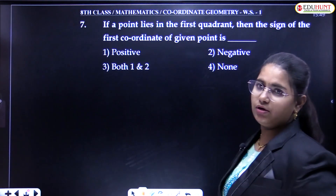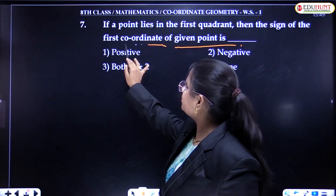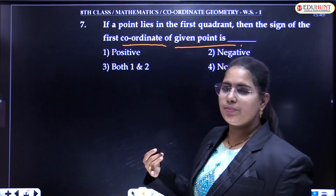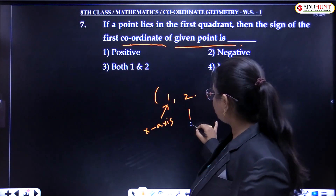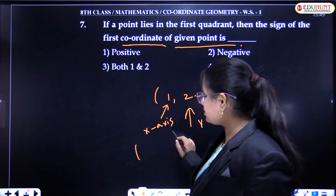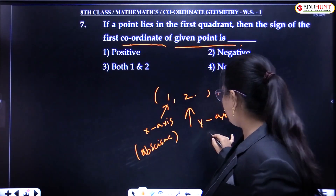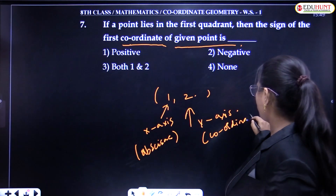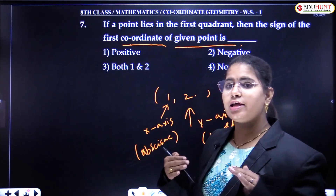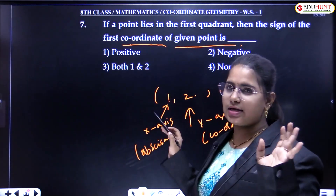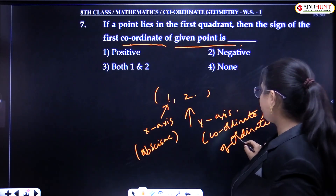Next question: if a point lies in the first quadrant, what is the sign of the first coordinate? Let's recall some terminology. For a point like (1, 2), the X value is called the abscissa — that is the other name for the X coordinate. The other name for the Y coordinate is the ordinate. So the coordinate of the X axis is called abscissa, and the coordinate of the Y axis is called ordinate.